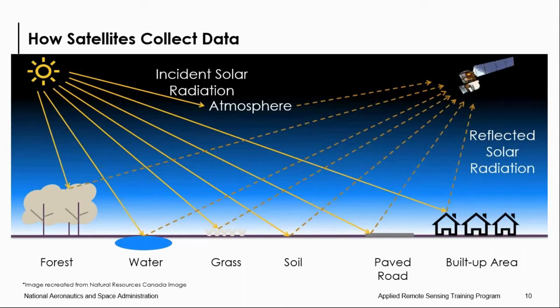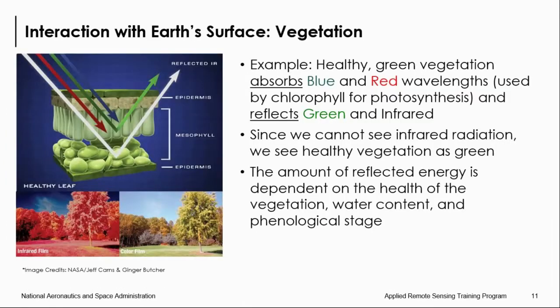Different materials reflect and absorb differently at different wavelengths, and satellite sensors collect radiation at various wavelengths. For green vegetation, blue and red wavelengths are absorbed, while green and near-infrared wavelengths are reflected — primarily because of the chlorophyll within the leaves. We see vegetation as green because we only see the reflected energy of the visible wavelength; we can't see infrared. So the green we see represents healthy vegetation.